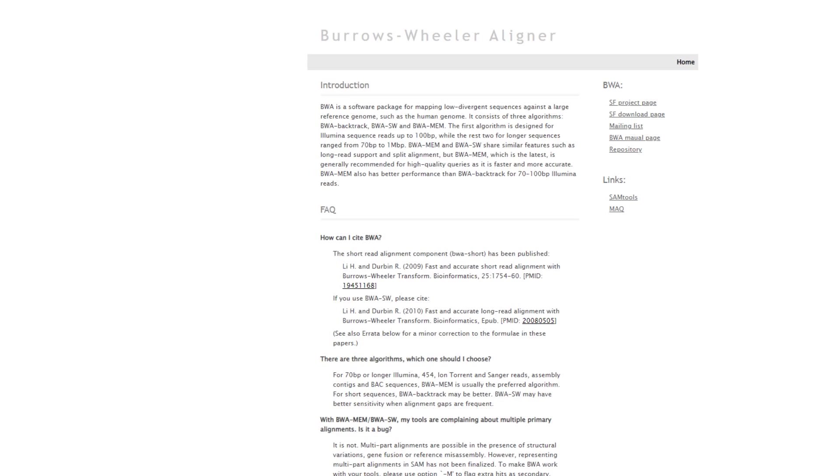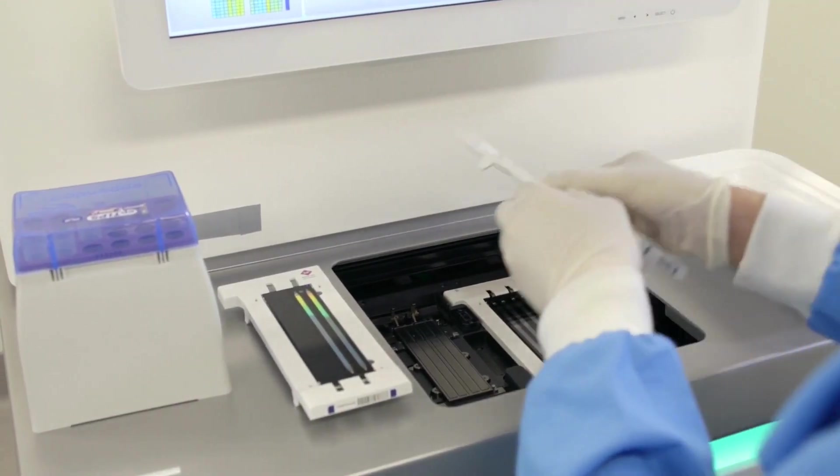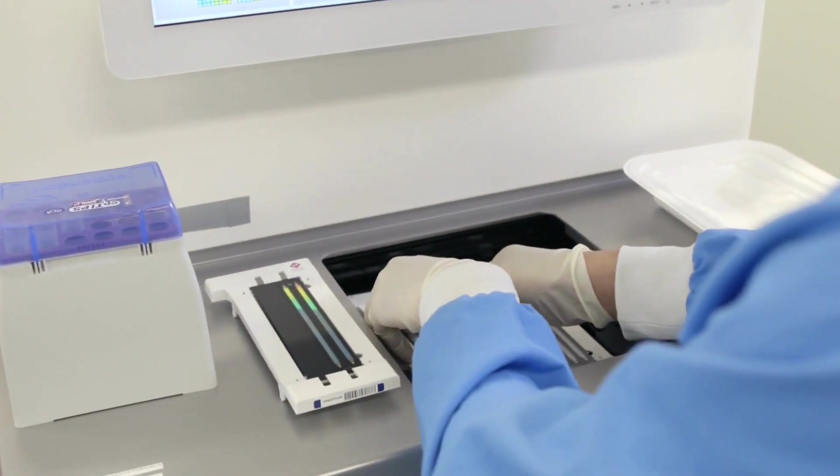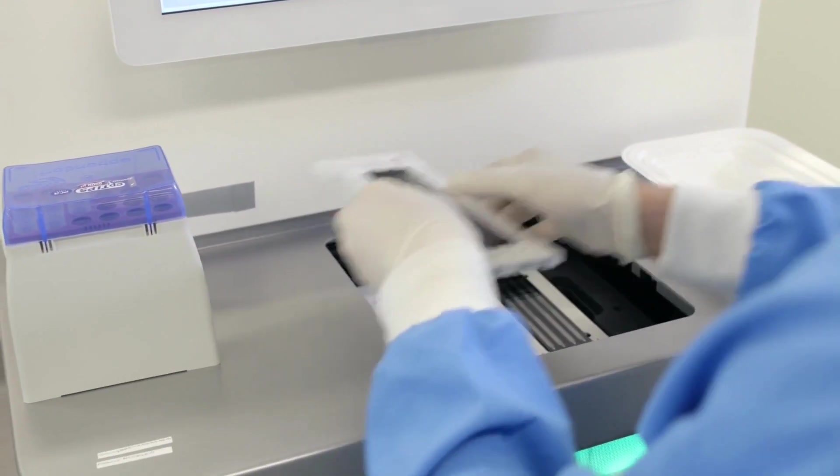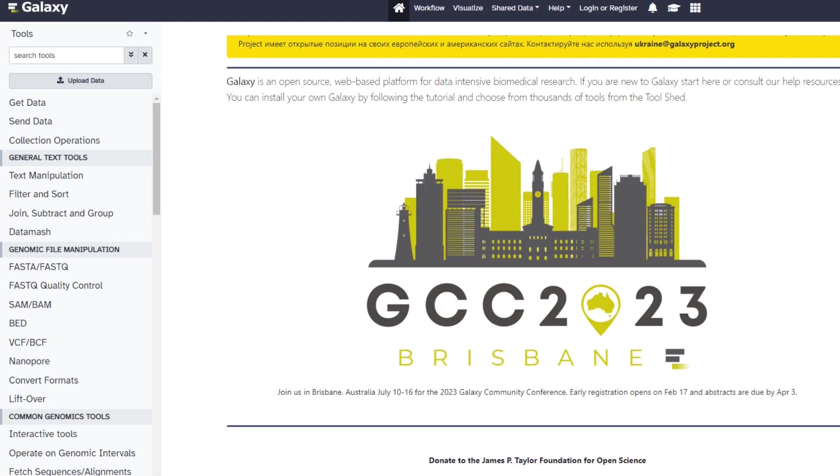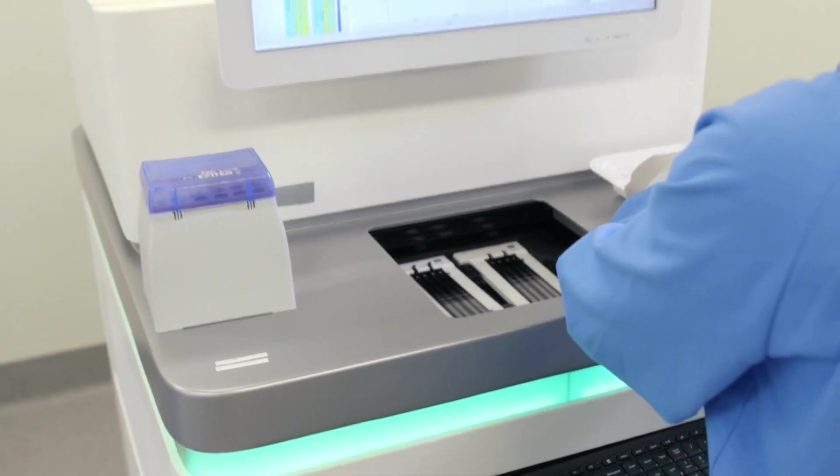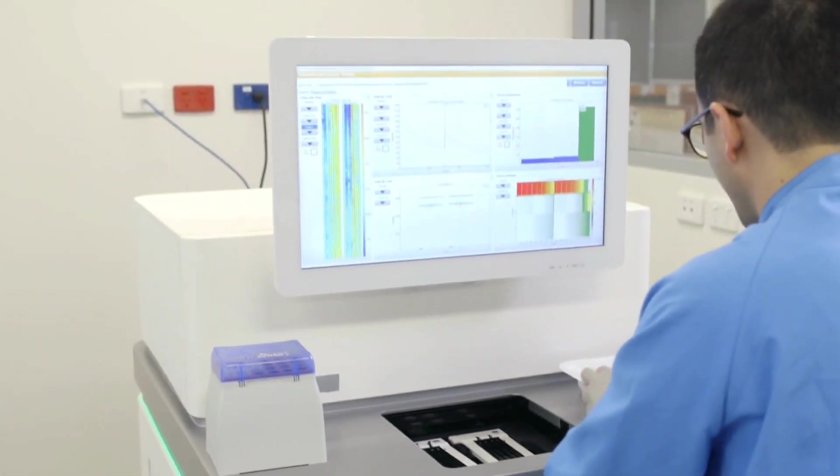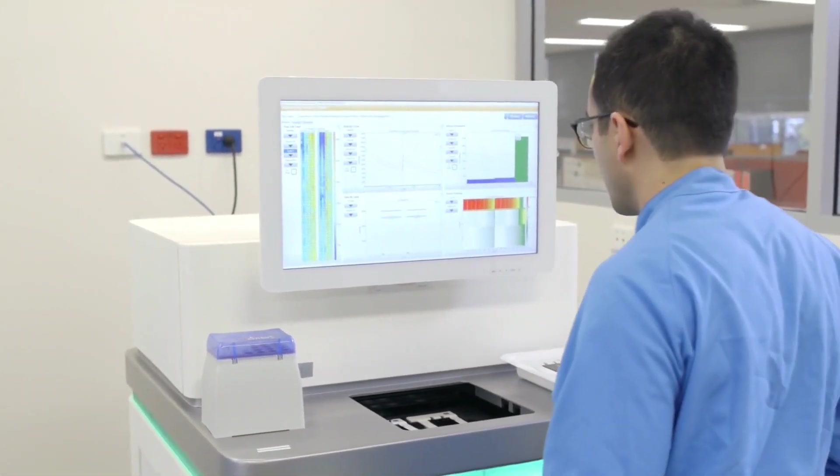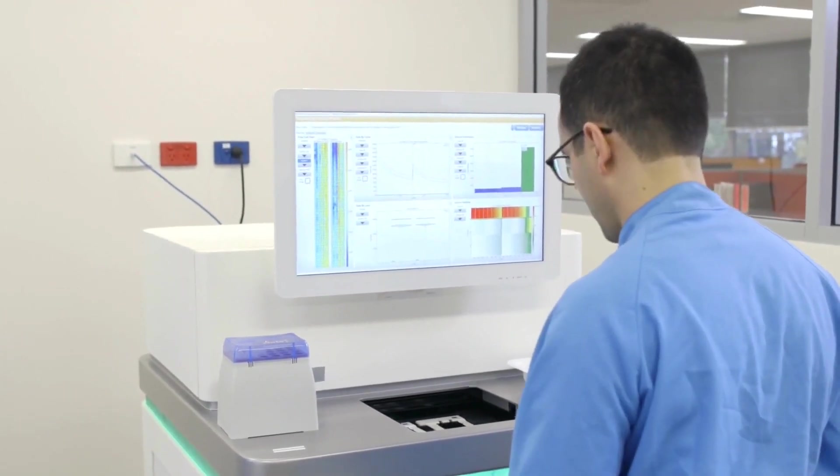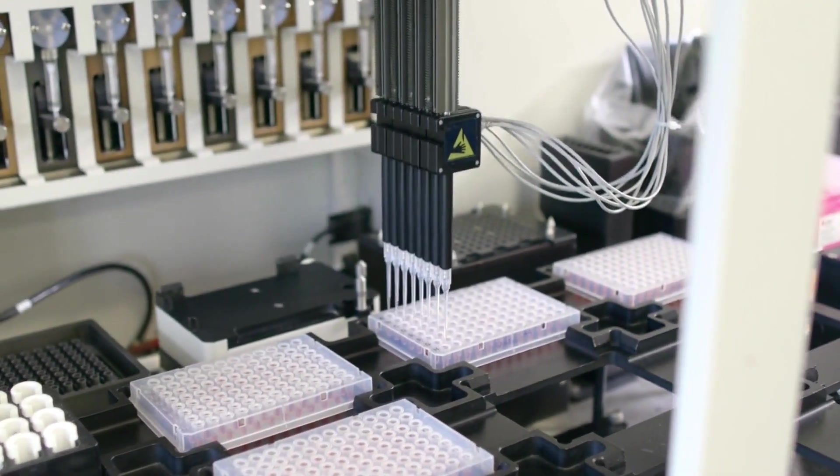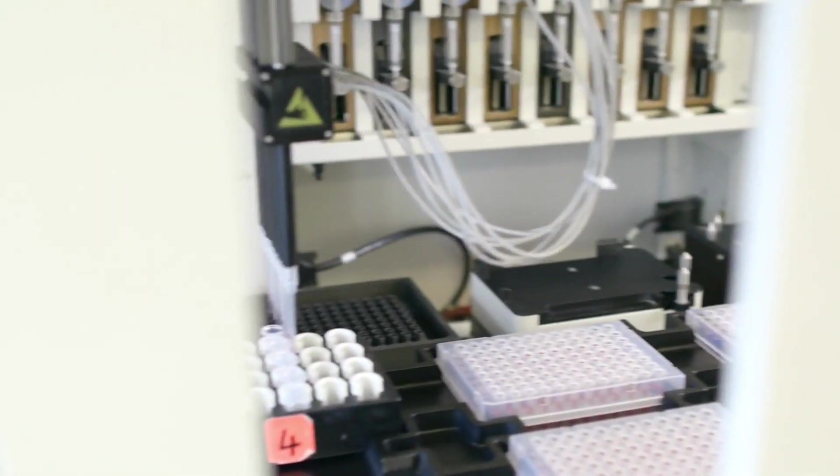Number 9: BWA. This is a widely used tool for aligning sequencing reads to a reference genome. It is particularly useful for mapping short reads from next-generation sequencing experiments. Number 10: Galaxy. This is a web-based platform that provides access to a wide range of bioinformatics tools and workflows. It is particularly useful for analyzing large-scale genomic data sets.